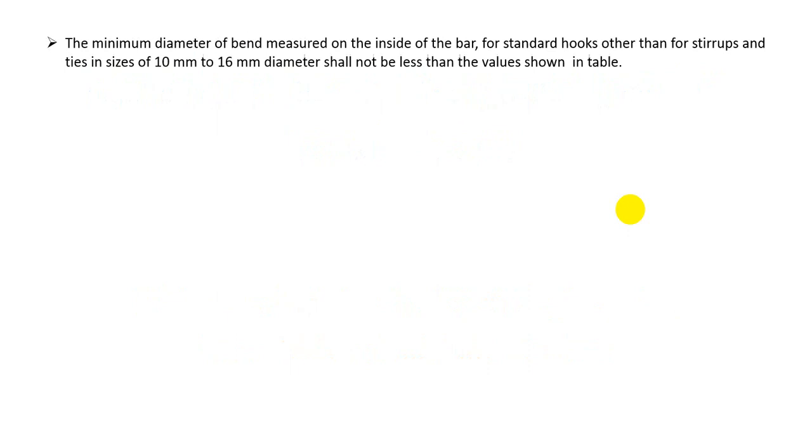First of all, here you are showing that the minimum diameter of band measured on the inside of the bar for standard hooks, other than for straps and ties in size of 10mm to 50mm diameter, shall not be less than the values shown in table.